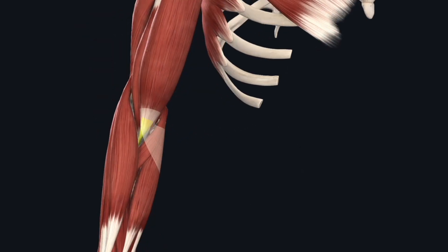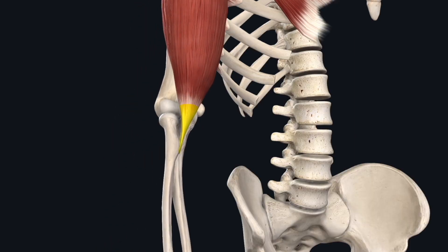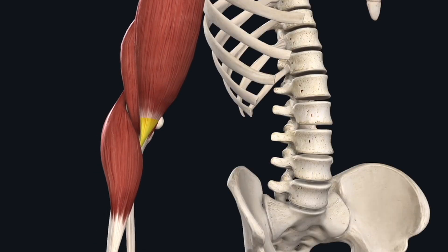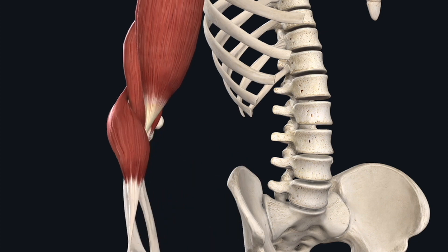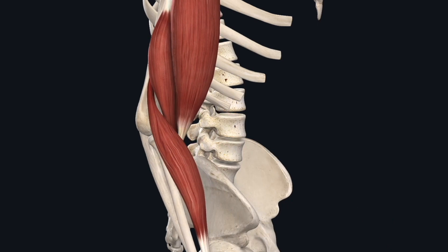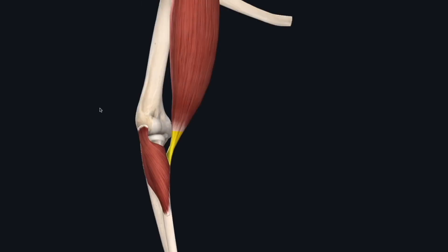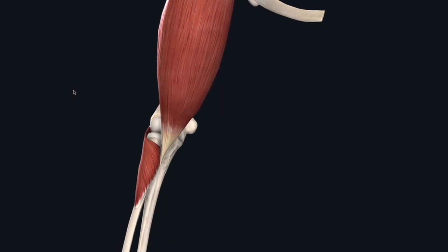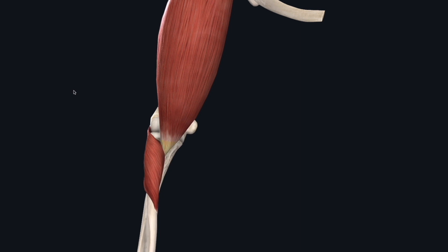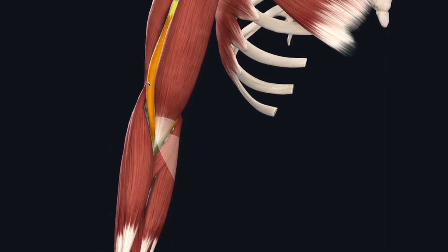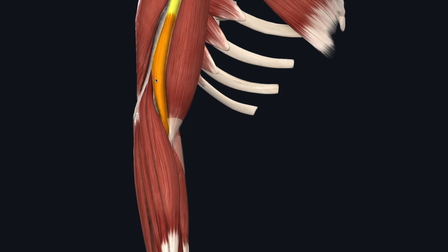Let's show that. Elbow flexion — and the biceps is your primary supinator of the forearm. You can see supination along with the supinator muscle. So biceps is the prime supinator of the forearm. The brachialis muscle is actually deep to that, and that is your prime elbow flexor.